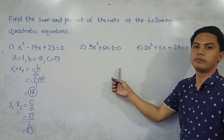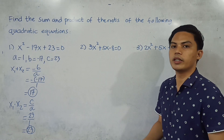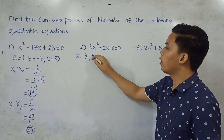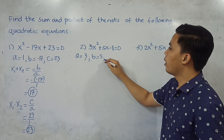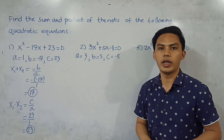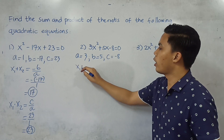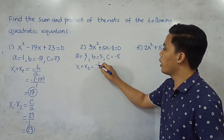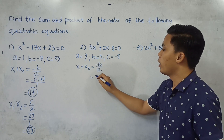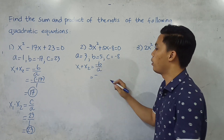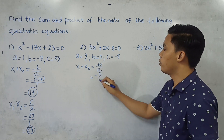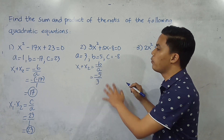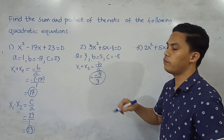Now for the second problem, the same process applies. Identify the values of A, B, and C. A is 3, B is 5, and C is negative 4. For the sum: x sub 1 plus x sub 2 equals negative B over A, so we have negative 5 over 3. Therefore, the sum of the roots is negative 5 thirds.